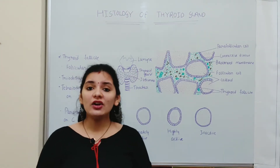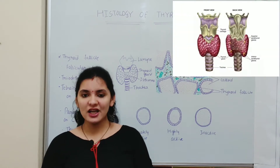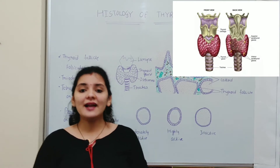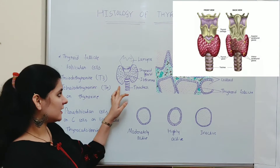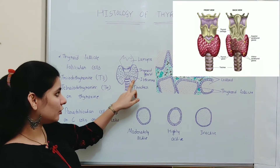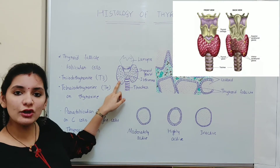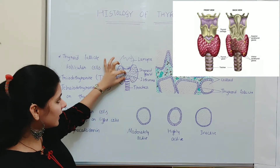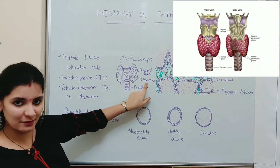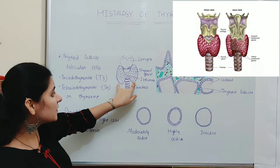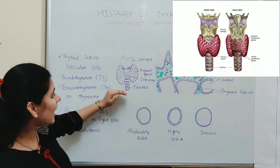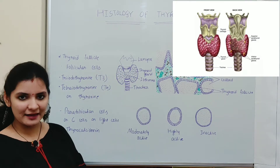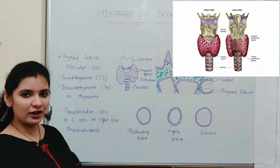As you all know, the thyroid is a butterfly-shaped gland which is present in the neck region, or the cervical region. The thyroid gland has mainly two lobes. As you can see in this diagram, this is the left lobe and this is the right lobe, joined together by an interconnecting part known as the isthmus. These two lobes lie lateral to the superior part of the trachea and inferior part of the larynx.